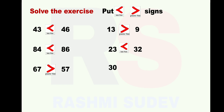Next question: 30 and 50. Given numbers are 30 and 50. 30 is to the left hand side, 50 is to the right hand side. 30 is the smaller number and 50 is the greater number. So what sign are you going to put here? Less than sign. How are you going to read this? 30 is less than 50. I hope you understood this chapter. Thank you.